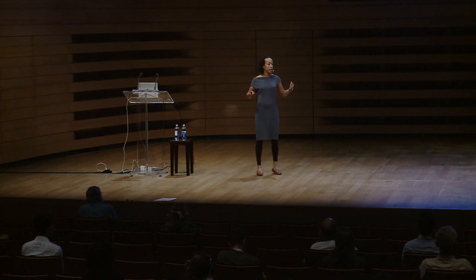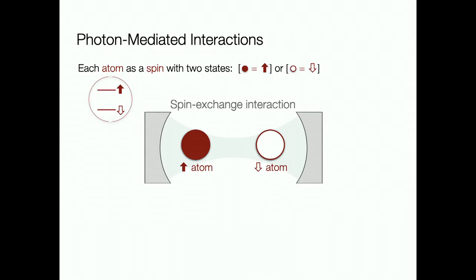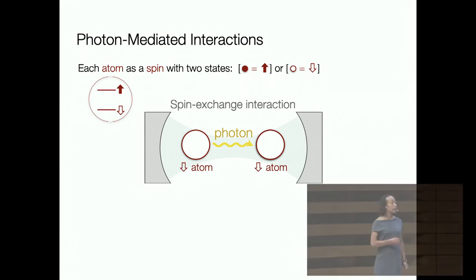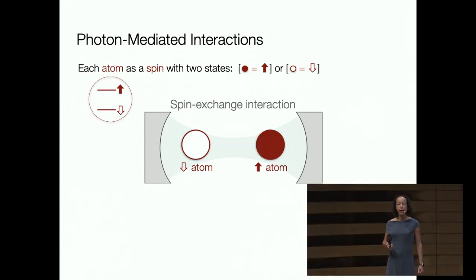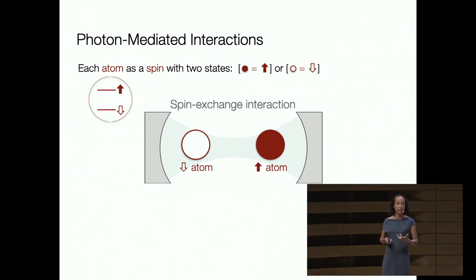Let me give a simple picture for how to think about these photon-mediated interactions. In the simplest case, if I had two two-level atoms and wanted to engineer a spin-exchange interaction, I could allow one atom to flip its spin, emit a photon into the cavity, and let that photon be absorbed by another atom. That gives a flip-flop process mediated by the light.